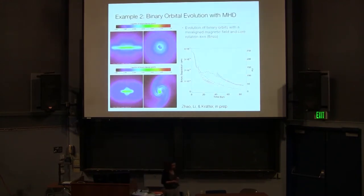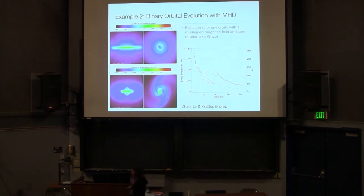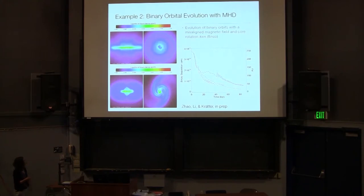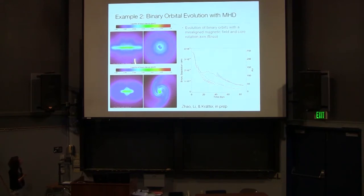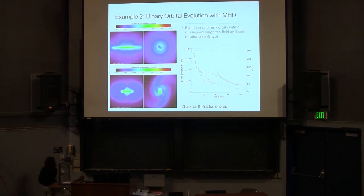A second example of binary problems you can solve with a grid code: this is some simulation work from Bo Zhao, a graduate student with Zhiyun Li at the University of Virginia. What he's been doing with ENZO — another publicly available MHD AMR grid code — is trying to simulate the evolution of binary orbits under the influence of magnetic braking. These are examples of the different geometries he gets depending on the alignment of the magnetic field with the axis of rotation, showing how it affects the separation of the binaries as a function of time. Just to give you a flavor of the types of calculations being done with grid codes.